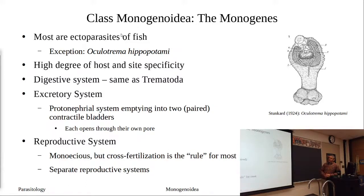This is an old picture of Oculotrema from one of the species descriptions from 1924, just to give you an idea of what these things might look like.